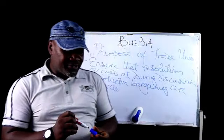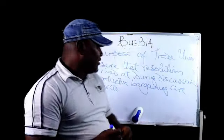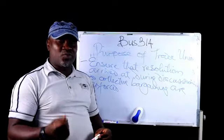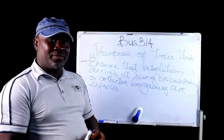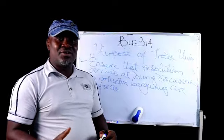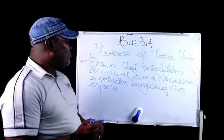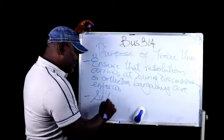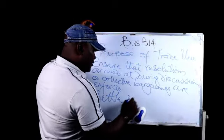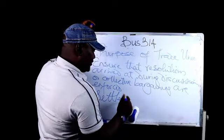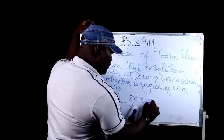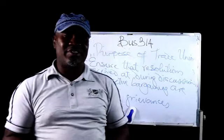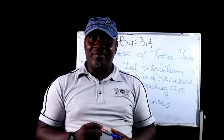Furthermore, they help settle grievances. There are instances where an individual employee will feel he or she is at a disadvantage or is not being treated fairly. One of the purposes of having a trade union is that they help settle such grievances. It means they intervene to protect collective interests and they also intervene to protect the interests of individual members.